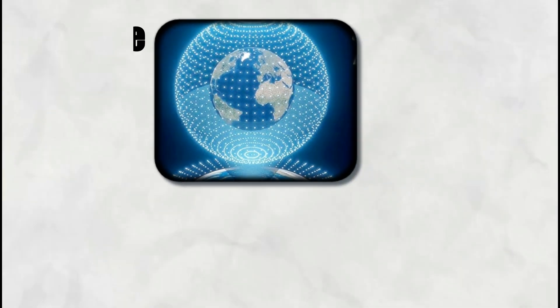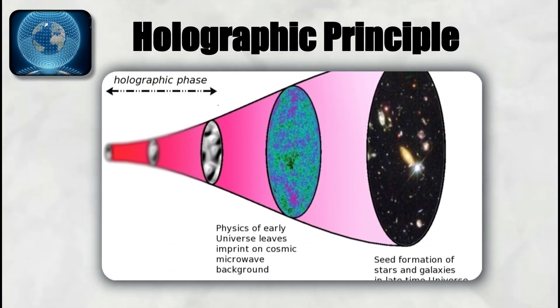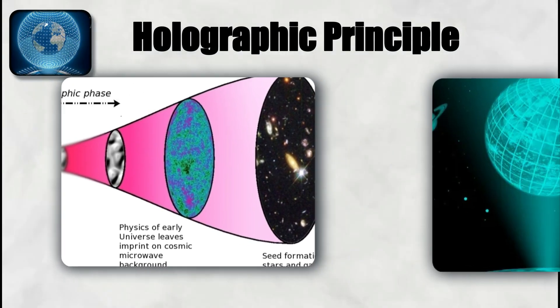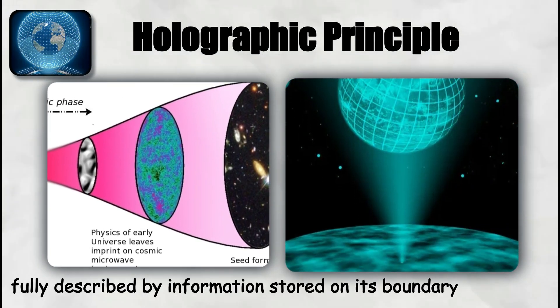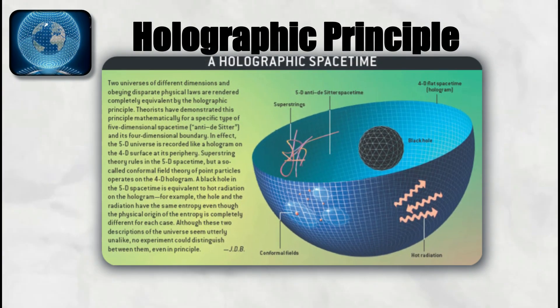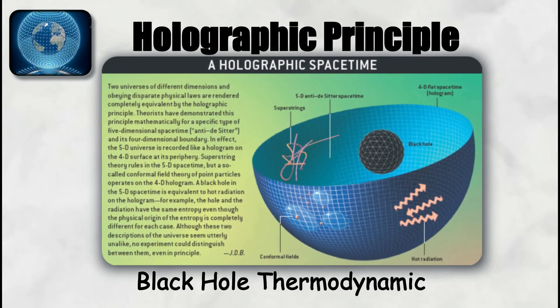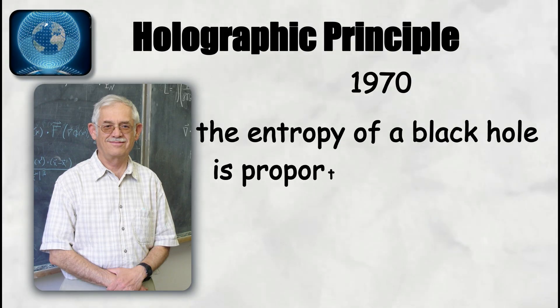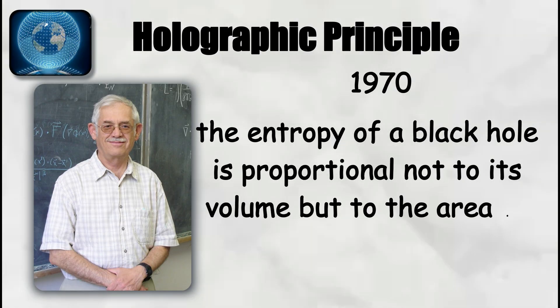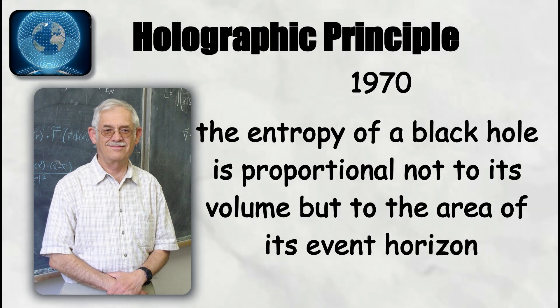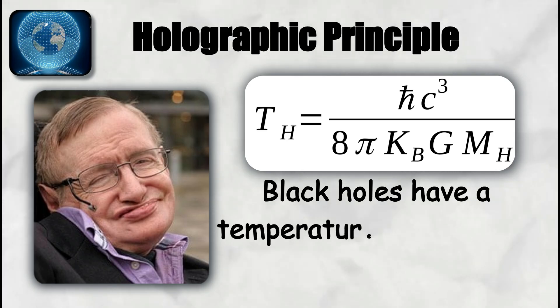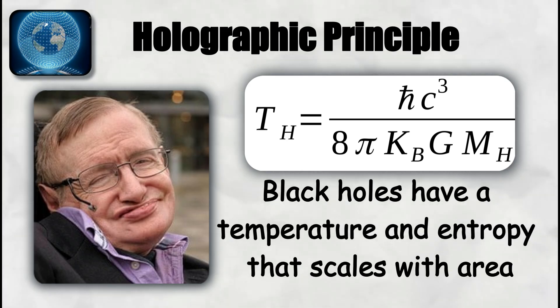Holographic principle. The holographic principle is the idea that all the information contained within a volume of space can be fully described by information stored on its boundary surface. This principle grew out of attempts to understand black hole thermodynamics. Jacob Bekenstein showed in the 1970s that the entropy of a black hole is proportional not to its volume but to the area of its event horizon. Stephen Hawking's calculation of Hawking radiation confirmed that black holes have a temperature and entropy that scales with area.